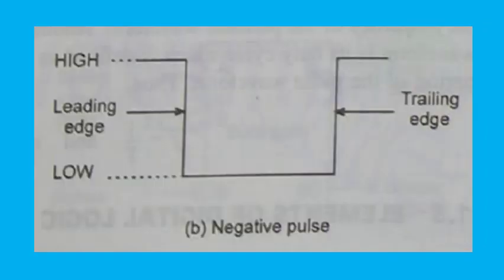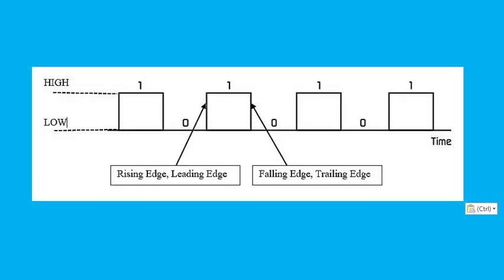The pulses shown in the figure are ideal because the rising and falling edges change instantaneously, i.e., in zero time. Practical pulses do not change instantaneously from low to high or from high to low.